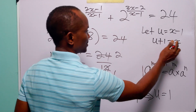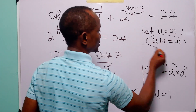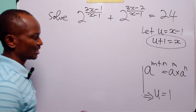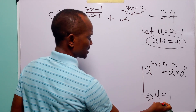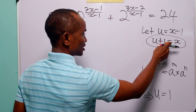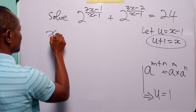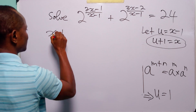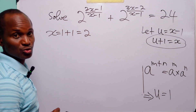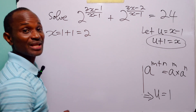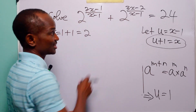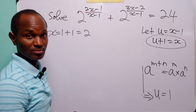And then we go back to this equation to find the value of x. So when u is equal to 1, x is going to be equal to 1 plus 1, which is equal to 2. So we have that the value of x that satisfies this exponential equation is 2.